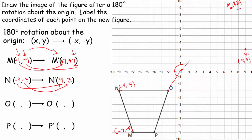Let's look at O. O is at negative 2, negative 3. Let's write that in over here. Under a 180 degree rotation about the origin, I'm going to change the sign on both the x and the y. So this negative 2 becomes a 2, and this negative 3 becomes a positive 3. Let's hope we're in the first quadrant — and it looks like we are! So we are now O prime at 2, 3.